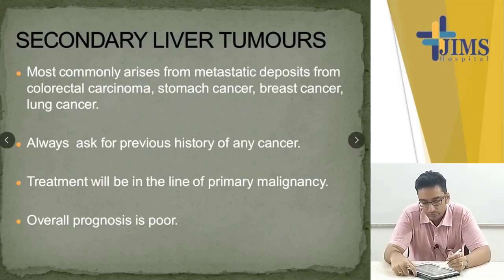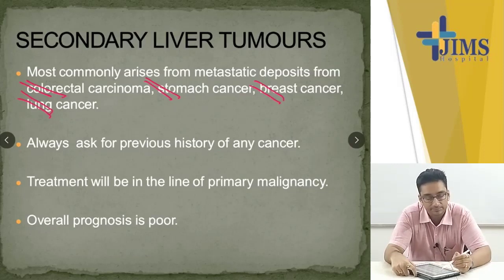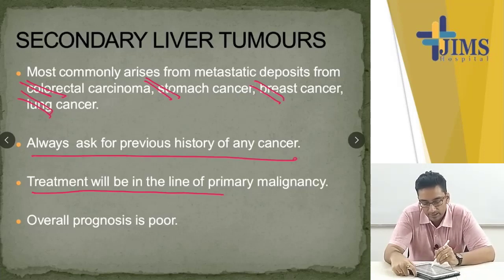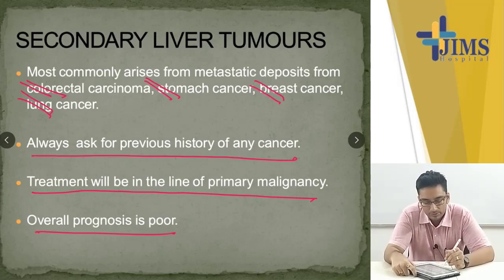Secondary liver tumors most commonly are metastatic deposits from colorectal carcinoma, stomach cancer, breast cancer, and lung cancer. Always ask for a previous history of any cancer. Treatment will be in line with the primary malignancy. Overall prognosis is poor.